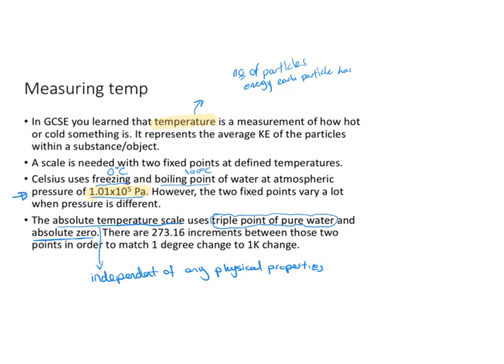So that's what Kelvin uses as one of its two fixed points — the triple point of water and absolute zero. Absolute zero is the lowest temperature ever possible; there's nothing lower than that temperature. We can't even fully reach it in a lab — scientists have come close but cannot reach absolute zero fully. Absolute zero is the temperature at which particles will have minimum internal energy; a substance will have minimum internal energy at that point.